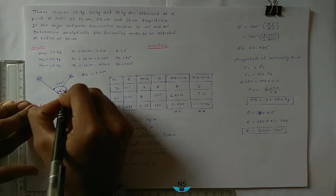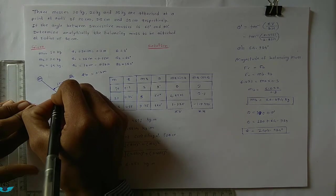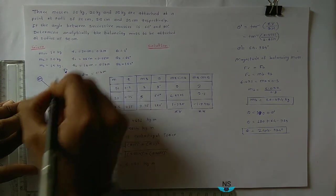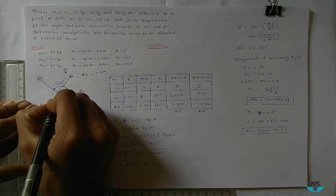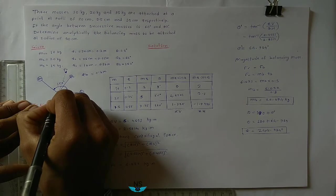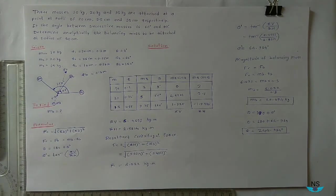So if resultant force is there, on opposite side there will be balancing mass at 0.3 meter radius. This is our answer.